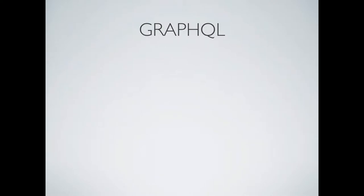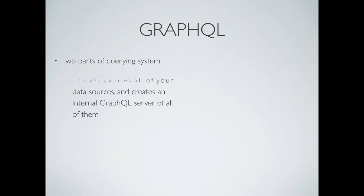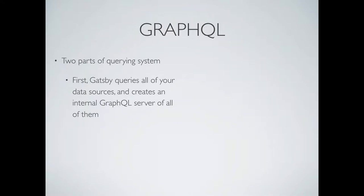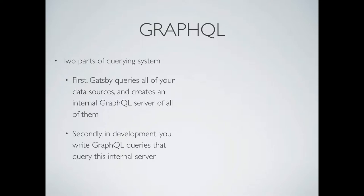Remember how I said Gatsby can bring data from anywhere? That's not super special — you can do that with pretty much anything. But what Gatsby does is more unique because it has a two-part querying system. First, it queries all your data sources. Then the cool part: it builds an internal GraphQL schema. So then all of your images, blog posts from Markdown, data from Drupal — all that is queried in the same way with GraphQL queries.